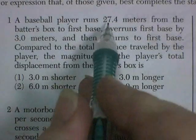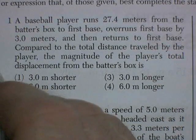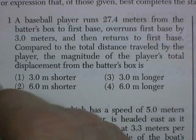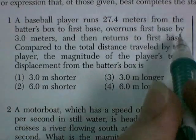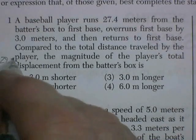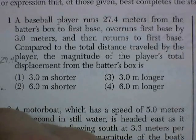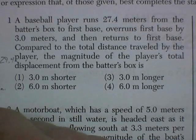A baseball player runs 27.4 meters from the batter's box to first base. What do you want to bet? That's the actual distance for a real baseball diamond. He overruns first base by about 3 meters, so he goes 27.4. He overruns it by 3 meters. He better return back, so he goes back 3 meters.